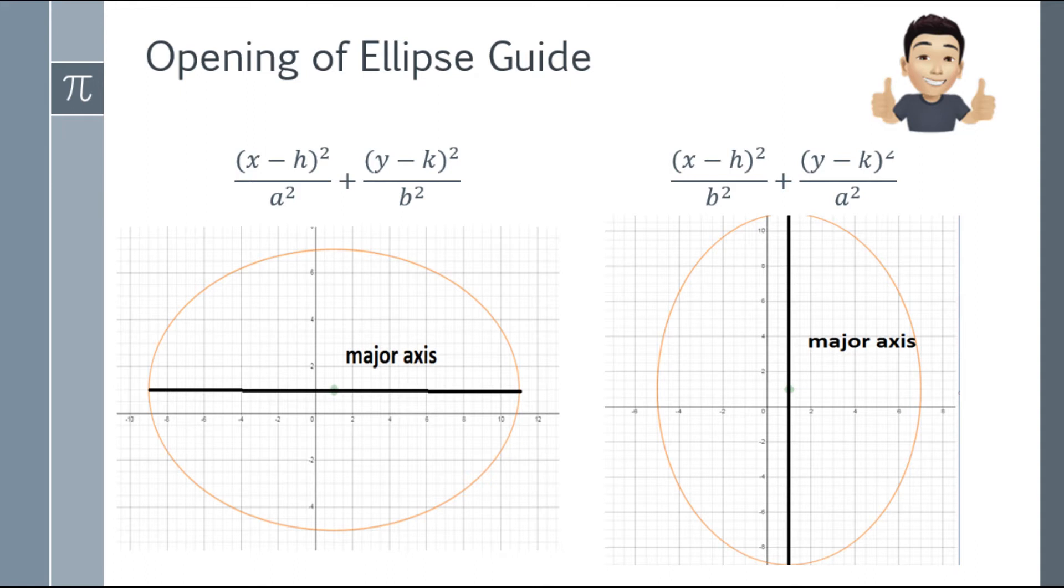Alright, next we have the opening of the ellipse guide. So notice the major axis is longer along the x-axis when that's where the a square is. Okay, remember, a is always greater than b in an ellipse. When a square is with y, the major axis is longer along the y-axis. It's parallel to the y-axis. You can see it in the image.